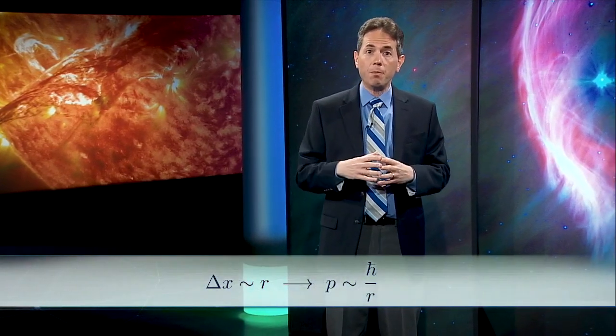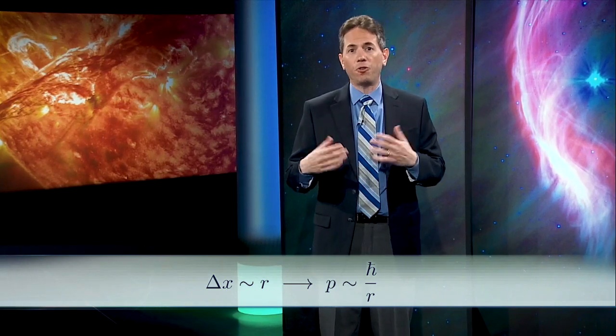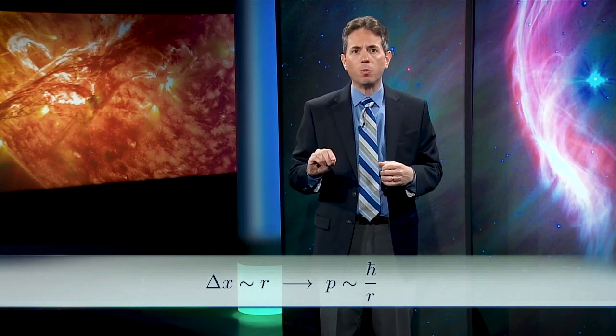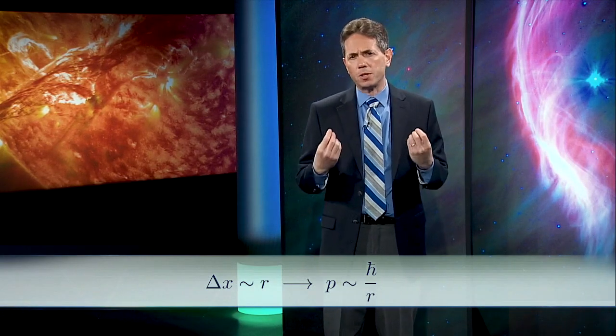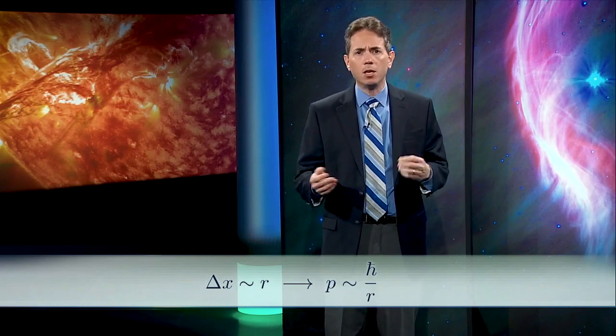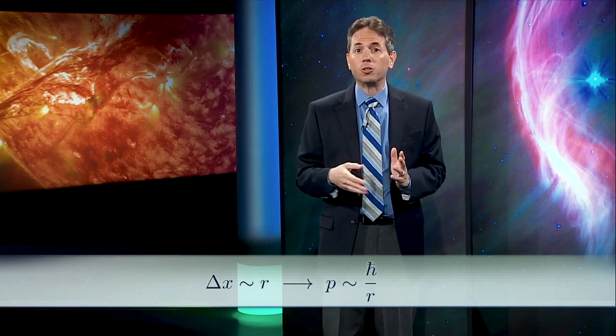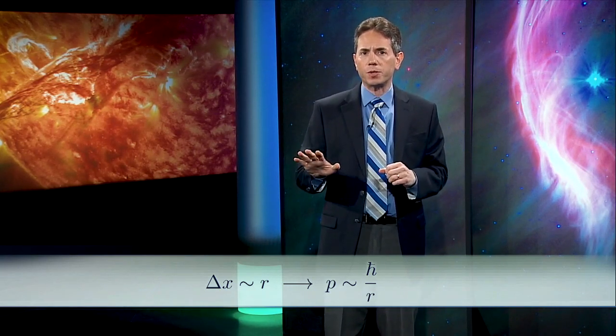To get the minimum energy, we need to balance the kinetic against the potential. Let's work it out. For p, we'll insert the minimum possible value of h-bar over r. Now, officially it should be 1 half h-bar over r, but this is just an order of magnitude calculation. We haven't been precise enough about the meaning of delta x and delta p to justify worrying about factors of 2. That's why there's a squiggle in the equation instead of an equal sign. Throughout this course, a squiggle means has the same order of magnitude.